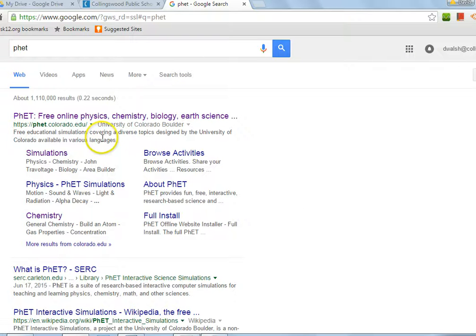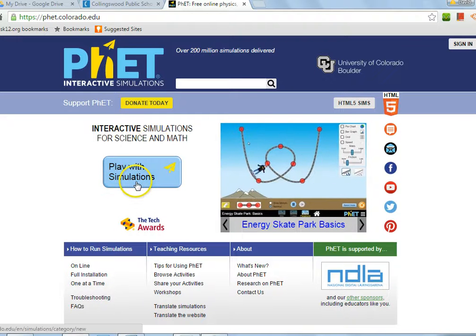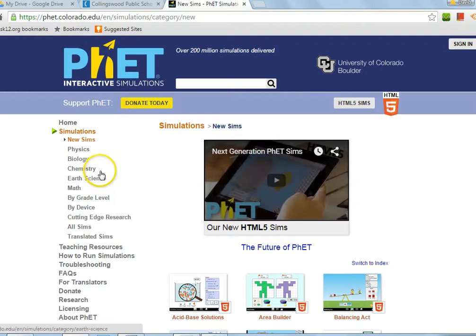And you'll notice that what comes up first is these PhET online physics, chemistry simulations. So this is great, this is exactly the website, the first one that we want, so we're going to go there, and then you can play with the simulations. You can go to chemistry, you can play with any of these simulations, they're actually kind of fun. We're going to be using them often in chemistry class, but I wanted to show you how to get to the list.